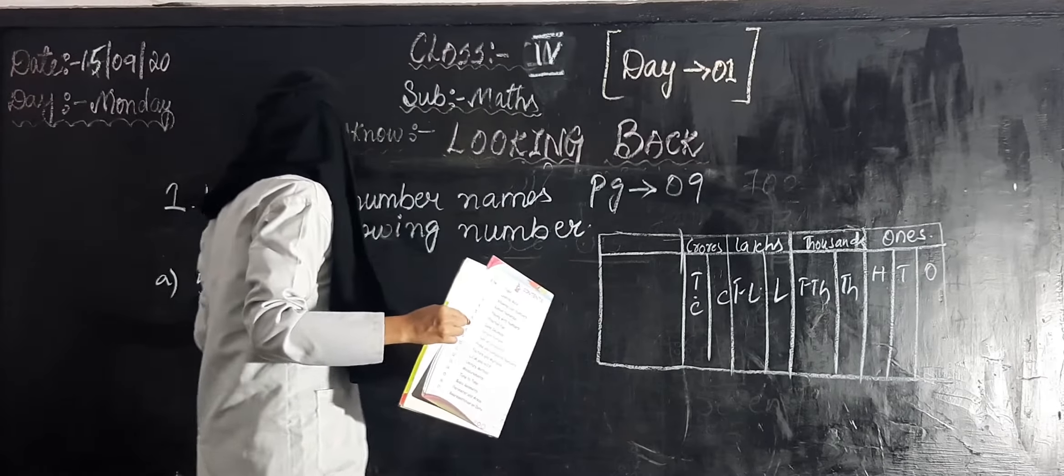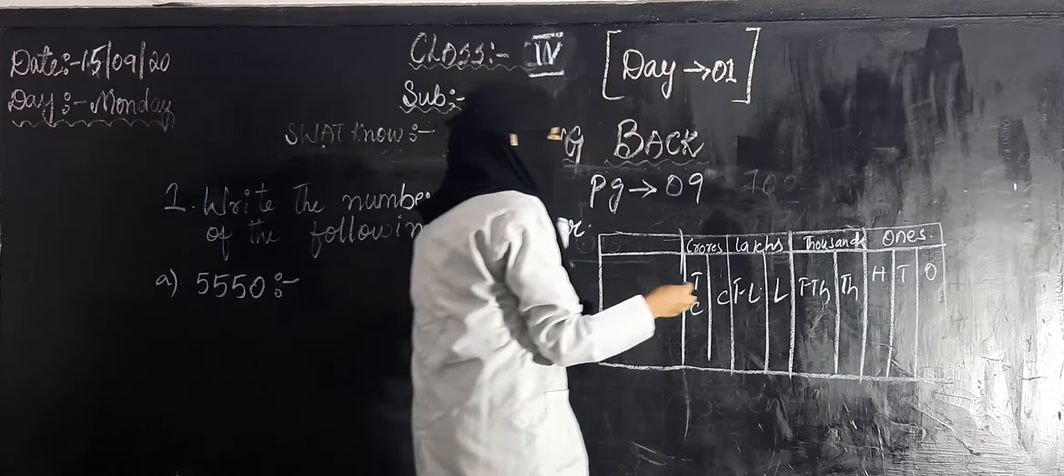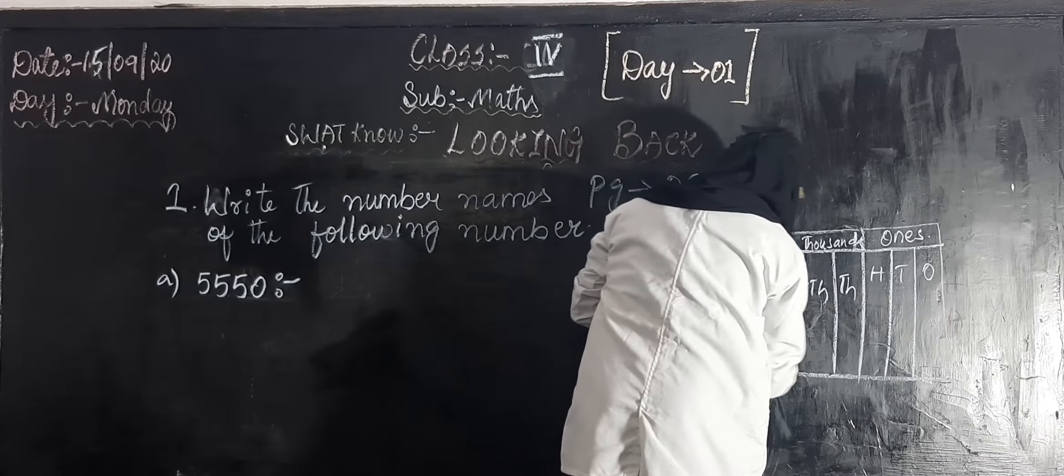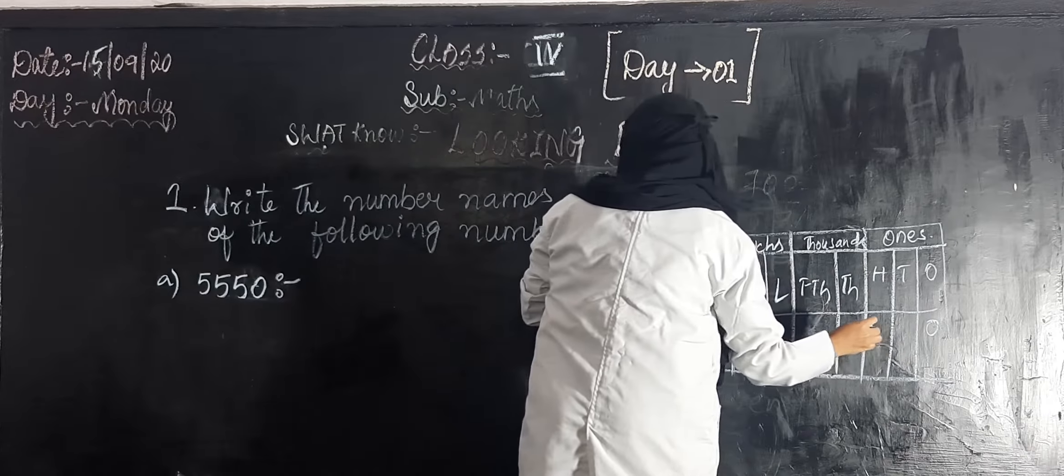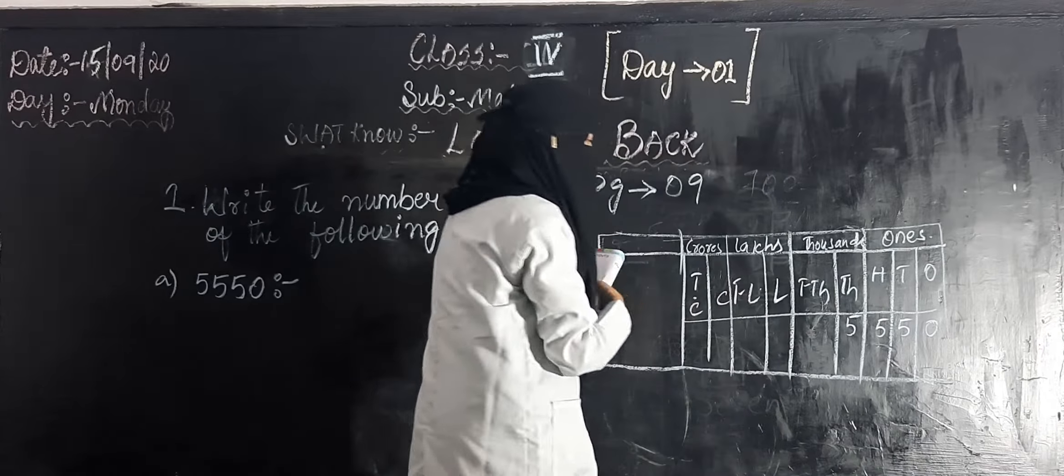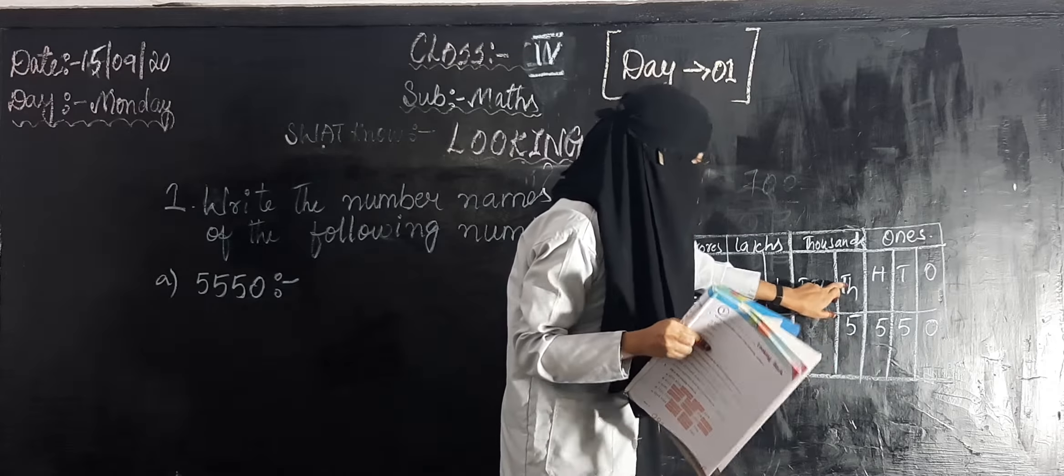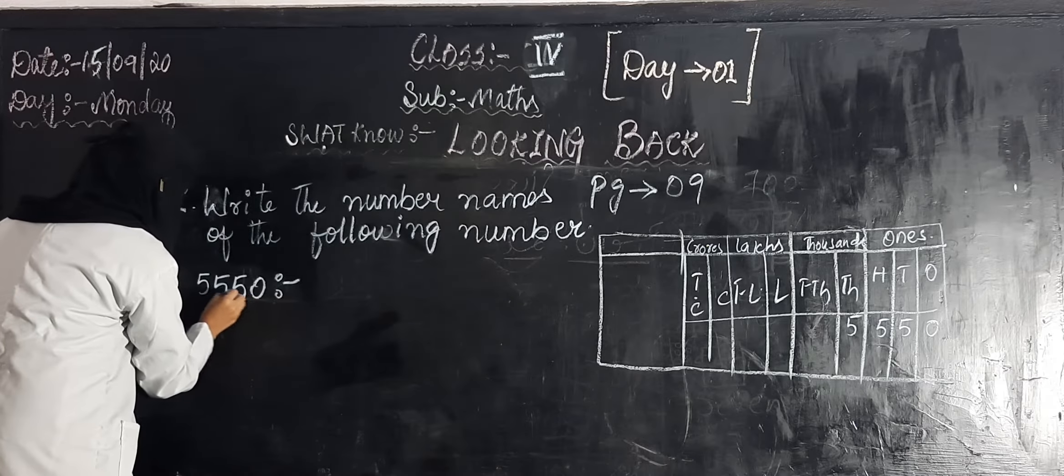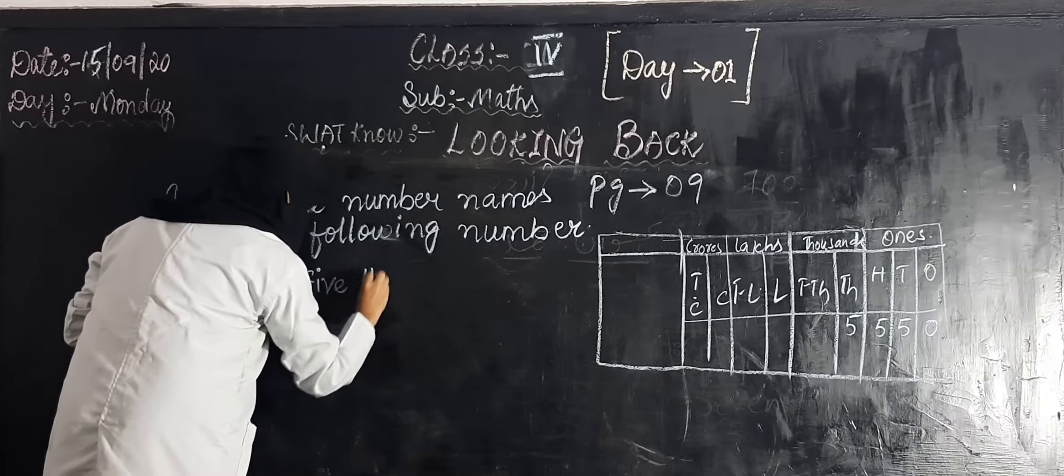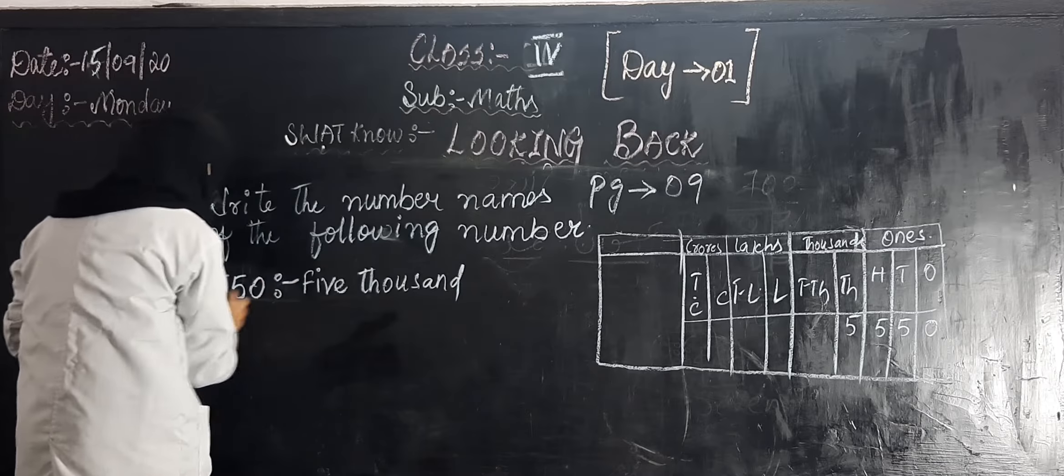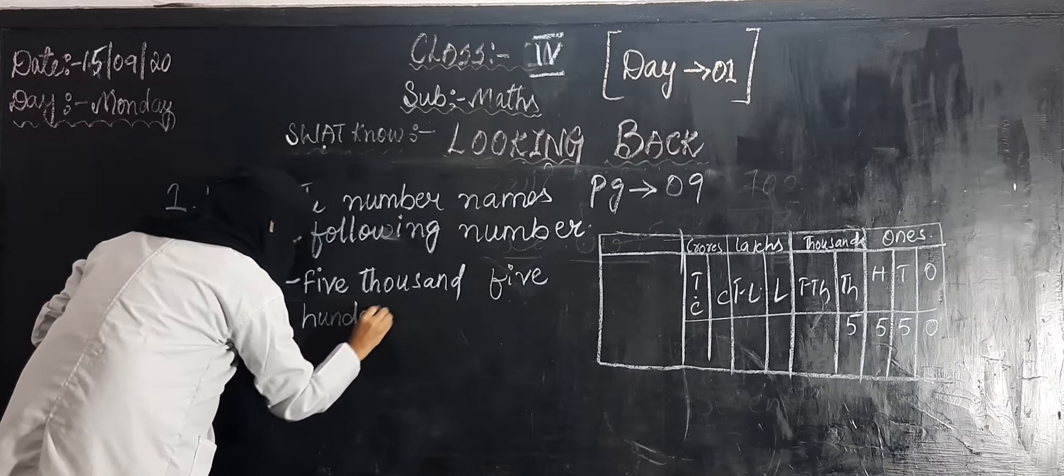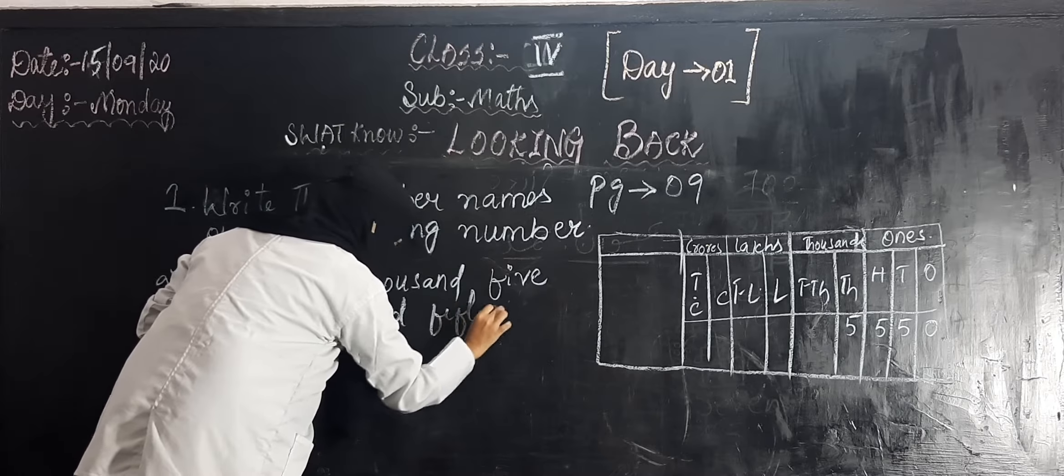How many numbers are there? One, two, three, four. So, you have to write from the left hand side. Zero, zero, five, five, five. So, what is the place value of this five? Thousand. So, you can write easily. One, tens, hundred. Thousand. How many thousand is there? Five. Five thousand five hundred and fifty.